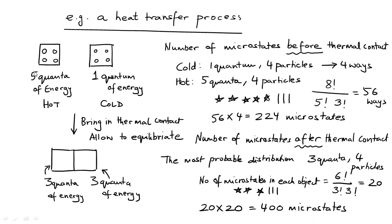Through this example, you can understand how the same amount of energy can be distributed differently, and thus the number of options or microstates can be different before and after the process. Nature spontaneously moves in a direction where there are more options for the energy to be distributed, or where the energy can be more spread out. If there are more options available, they would be taken.